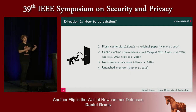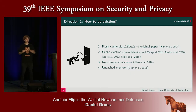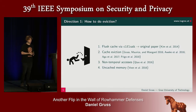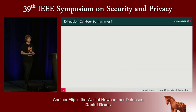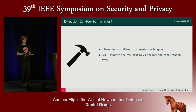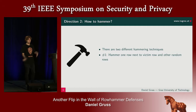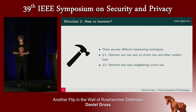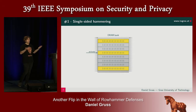There are different directions we can now go. The first is how do we do eviction? There are a lot of papers going in different directions here, as we just saw in an earlier talk. But there's also another direction: how do we actually hammer? Previously, there have been two techniques known. The first is we hammer one row next to a victim row and other random rows. Or we hammer two neighboring rows.